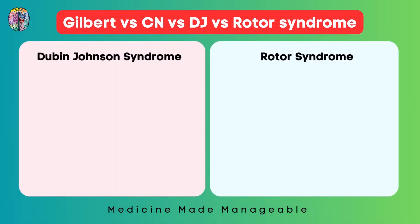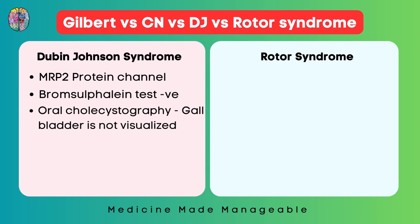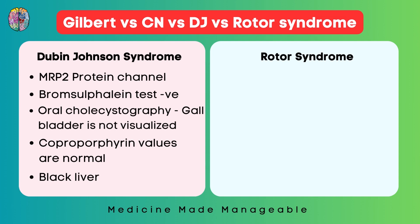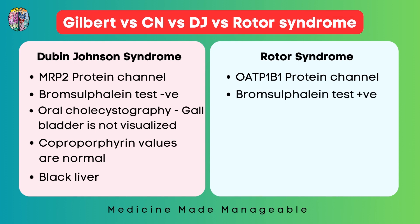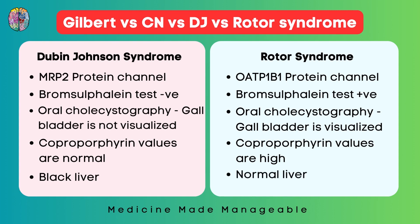In Dubin-Johnson syndrome, the MRP2 protein channel is defective. The Bromsulphalein test is negative and on oral cholecystography the gallbladder is not visualized. Porphyrin values are normal but a black liver is seen — this is a very important distinguishing point. In Rotor syndrome, the OATP1B1 protein channel is defective. The Bromsulphalein test is positive and the gallbladder is visualized on oral cholecystography. Coproporphyrin values are high, but the liver is normal — no black pigment.